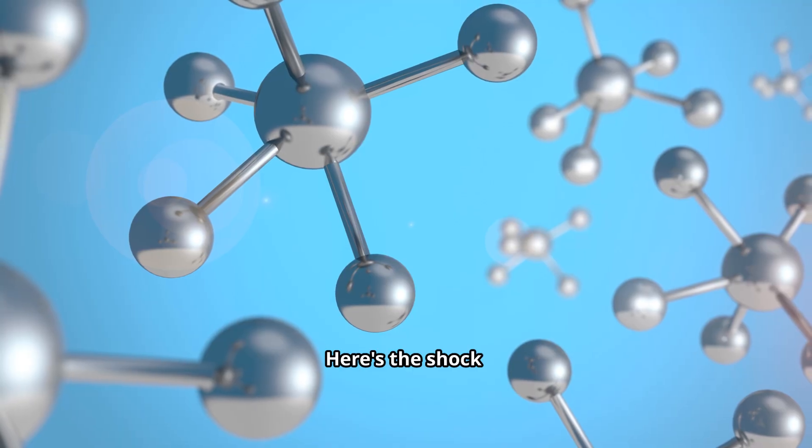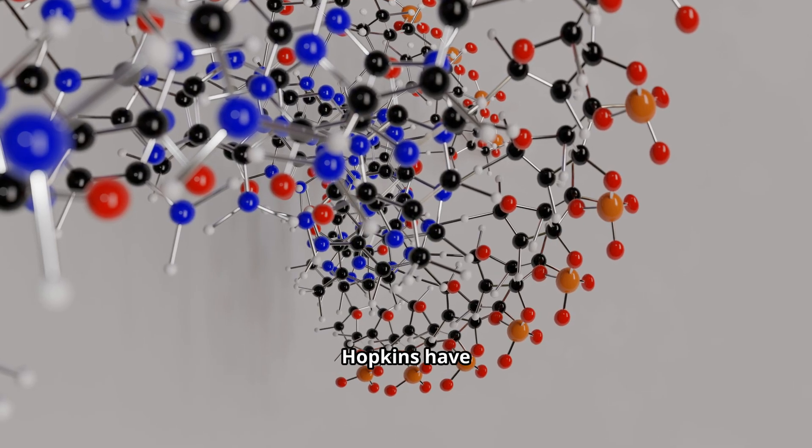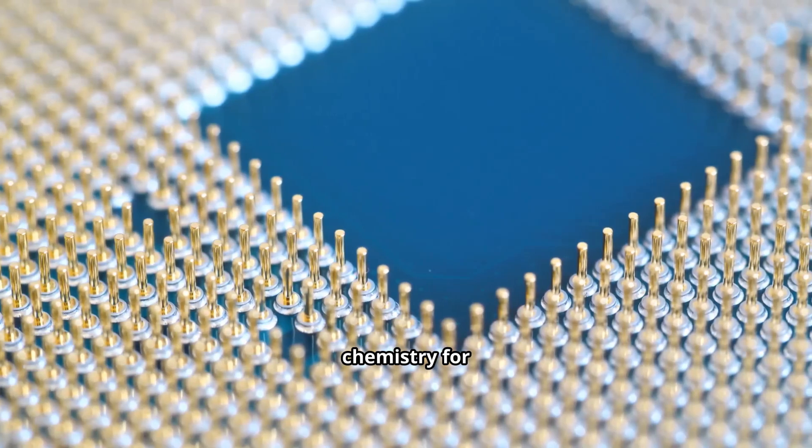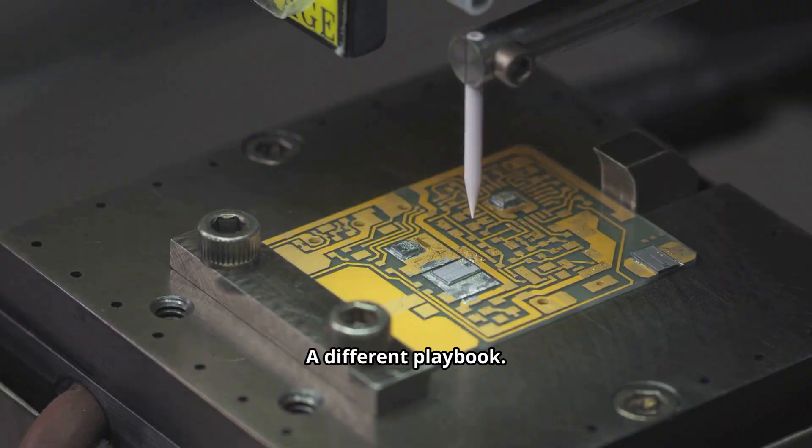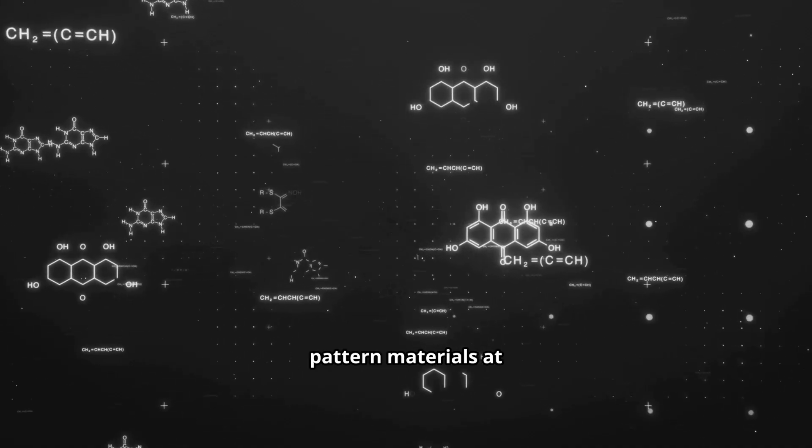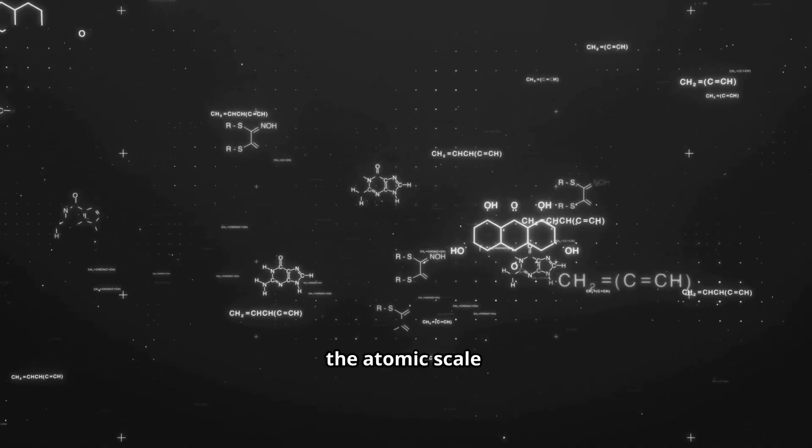Here's the shock. Researchers at Johns Hopkins have uncovered a new chemistry for building microchips, not a tiny tweak, a different playbook, a way to grow and pattern materials at the atomic scale.